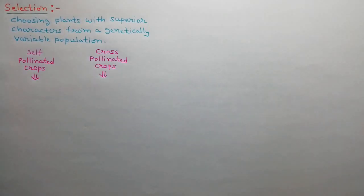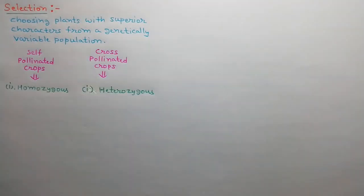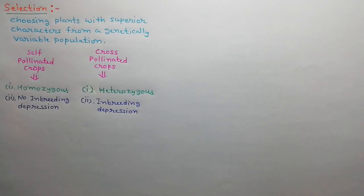Self and cross-pollinated crops show differences: self-pollinated crops are homozygous while cross-pollinated crops are heterozygous. Self-pollinated crops do not show inbreeding depression while cross-pollinated crops show inbreeding depression.